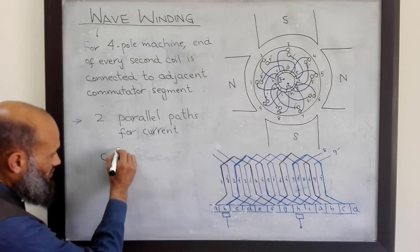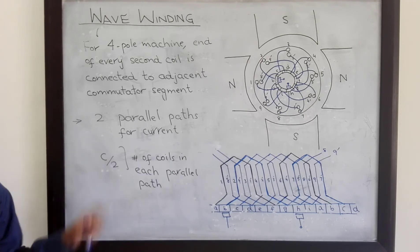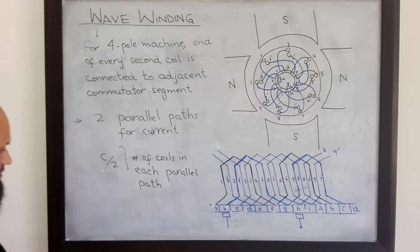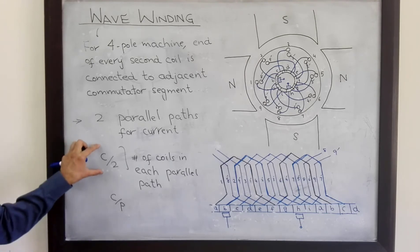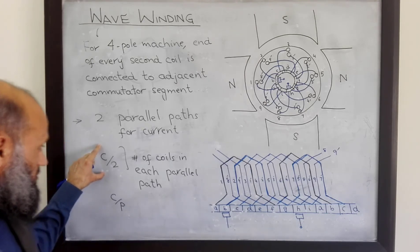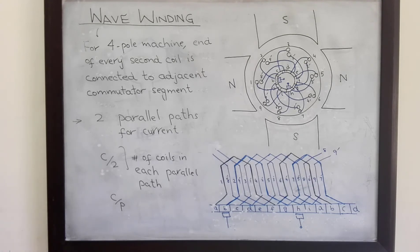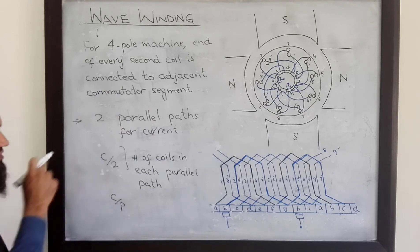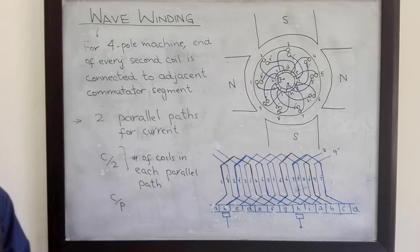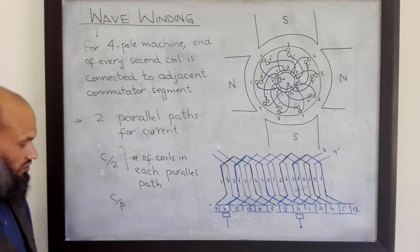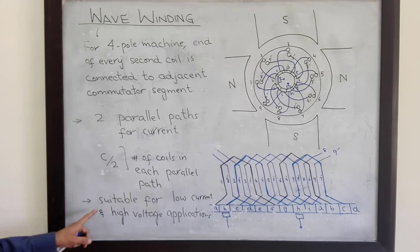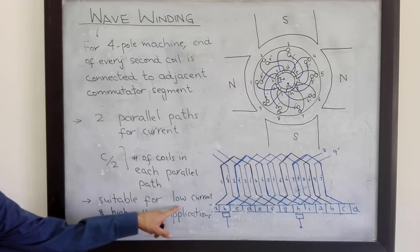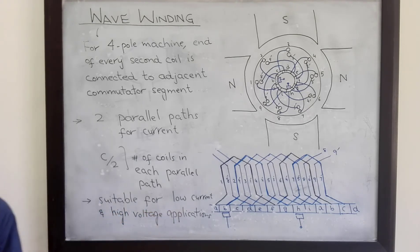Compared to the case of lap winding, where you had C divided by P coils in each parallel path, here you have more coils in each parallel path. More coils means the induced voltage available at the brushes will be larger. So wave-wound DC machines can handle more voltages — these are suitable for applications which have high voltages. Wave-wound DC machines are suitable for applications where you require low current and high voltages.